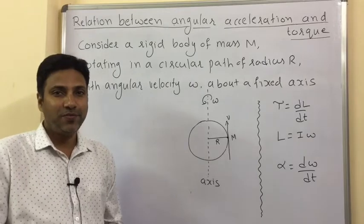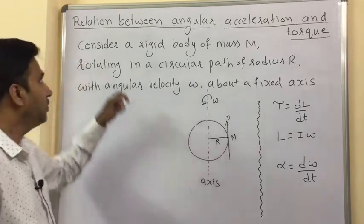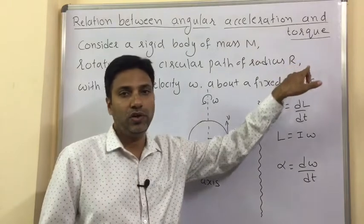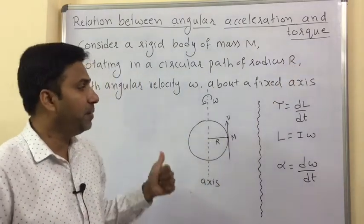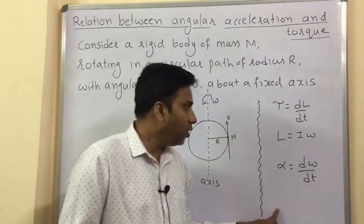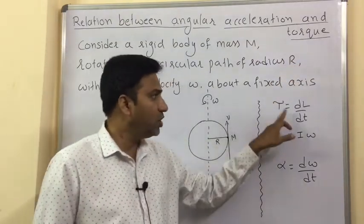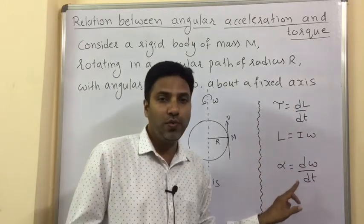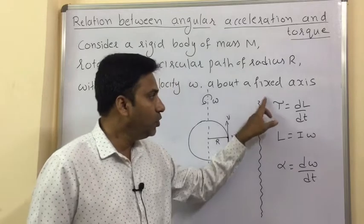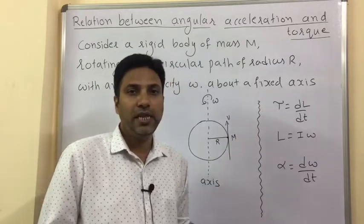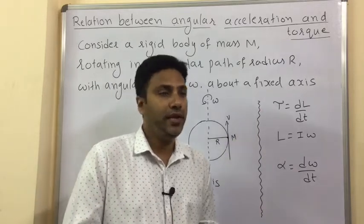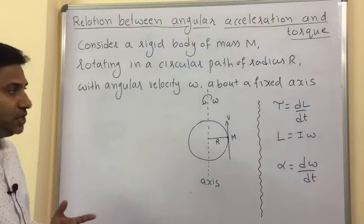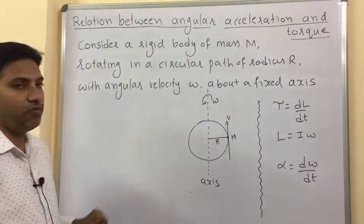Now let us find the relationship between angular acceleration and torque. To find this relationship, we should know the following formulas: tau equals dL by dt, L equals I-omega, and alpha equals d-omega by dt. If you know these three formulas, this relationship will be very easy.